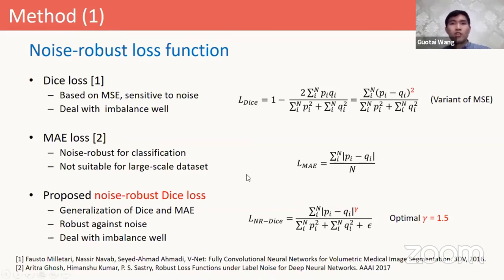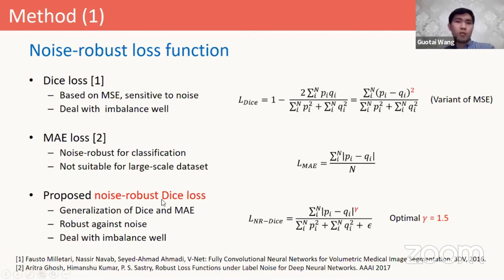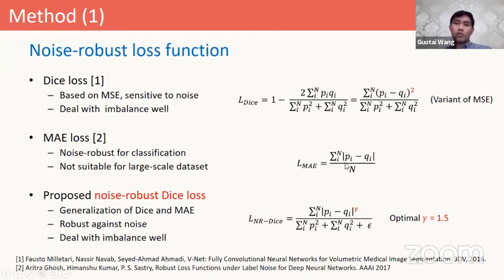So in order to overcome their limitations and make use of their advantages, we propose a generalization of the Dice loss and the MAE loss, which is called noise-robust Dice loss, formulated like this. Here we can see there is a hyperparameter gamma. If gamma equals 2.0, it is the standard Dice loss. When gamma equals 1.0, it is a variant of the MAE loss. As I will show later, the optimal value of gamma is 1.5. So it is less sensitive to noise compared with Dice loss, and also it is more suitable for segmentation tasks compared with MAE loss.